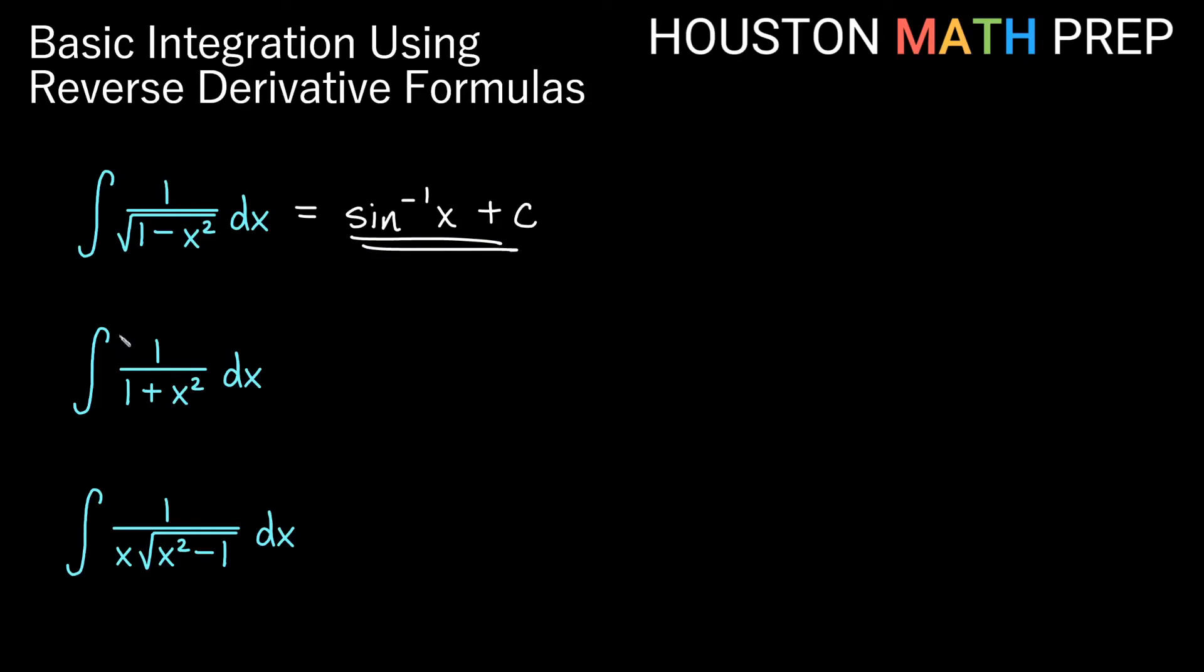For this next one here, the antiderivative of one over one plus x squared dx. That is the definition of derivative for inverse tangent of x there. So this antiderivative would be inverse tangent.